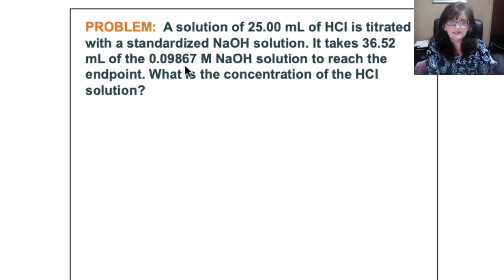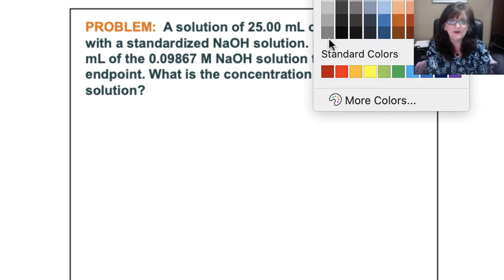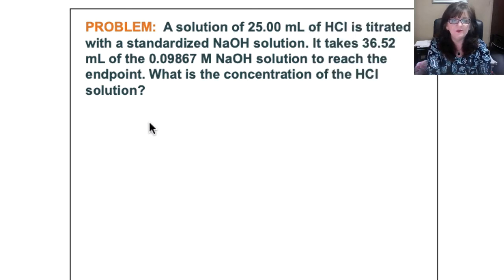Hi class, this is from the lecture notes and hopefully you've worked on this. We have a solution of 25 milliliters of hydrochloric acid titrated with a standardized sodium hydroxide solution. It takes 36.52 milliliters of 0.09867 molar sodium hydroxide solution to reach the endpoint. What is the concentration of the hydrochloric acid solution?